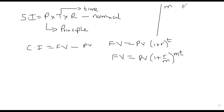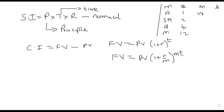To compound is to earn or accrue interest. You can earn interest annually — once a year — semi-annually, which is twice a year; quarterly, four times a year; monthly, 12 times a year. You can also earn interest weekly — 52 times a year — and daily, 365 times a year. These are the possible ways in which we can earn or accrue interest.